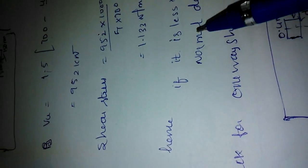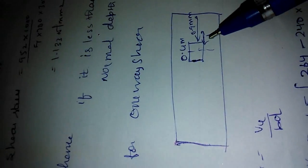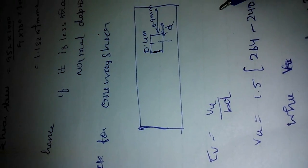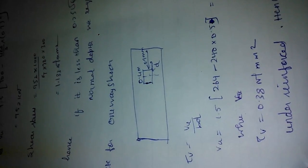V value and we get this. It is less than the 0.2 fck. Then it is normal depth as we consider. Depth for one-way shear is at distance of D, that is 0.3 m at the distance from the face. What we got is V value from the formula.